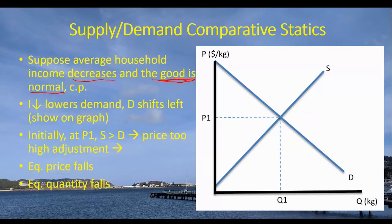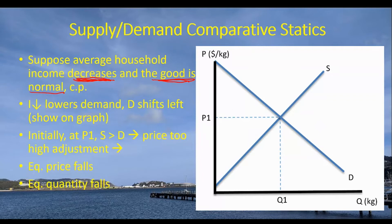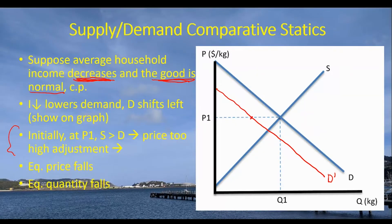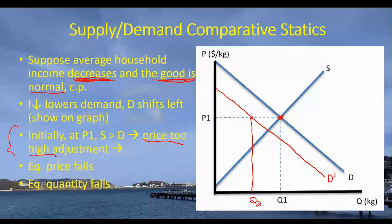With a decrease in income — perhaps due to a recession or a COVID pandemic shutting down the economy — household income falls. Since coffee is presumed to be a normal good, the demand curve shifts to the left to D prime. At price P1, demand is now at Q2 while supply initially remains at Q1, so we end up with a price-too-high situation.